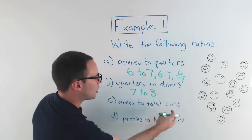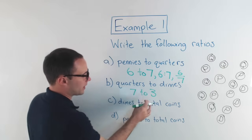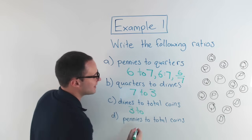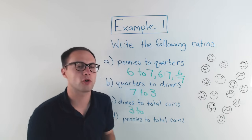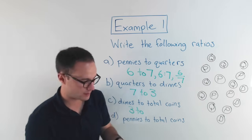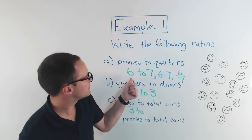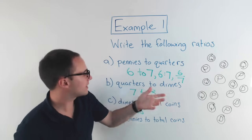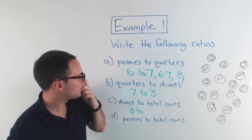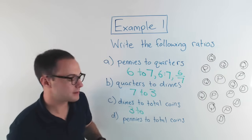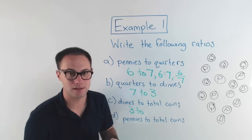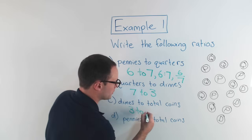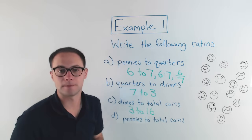Next one: dimes to total coins. Again, there were three dimes, so I have that. Now we're comparing them to total coins. Well, there were six pennies plus seven quarters, so that's 13, plus three dimes gives me 16. So dimes to total coins would be three to 16.